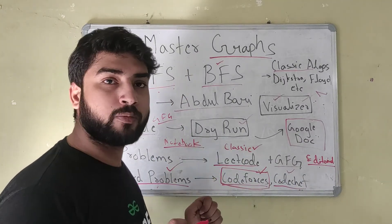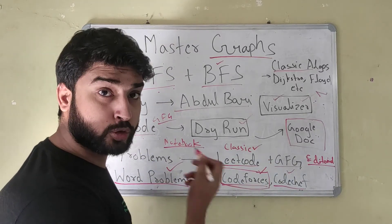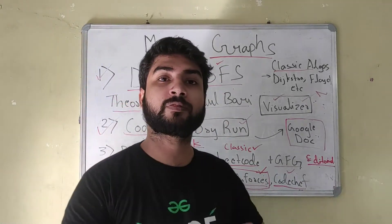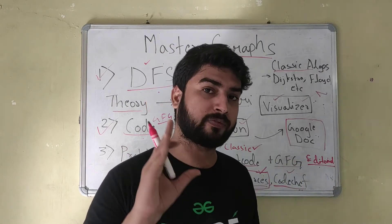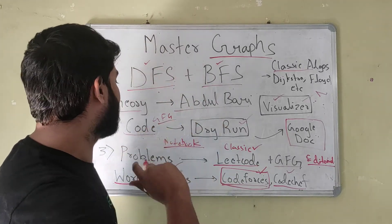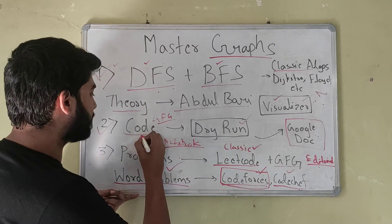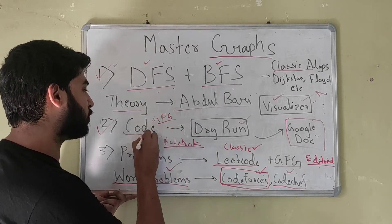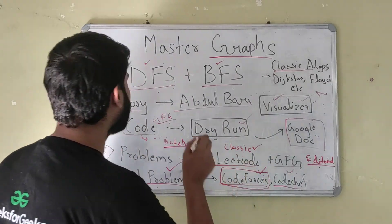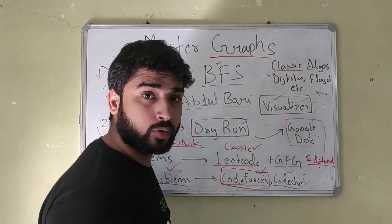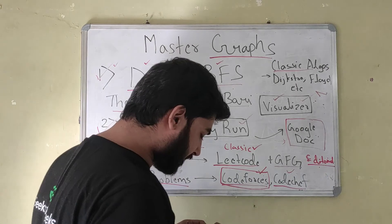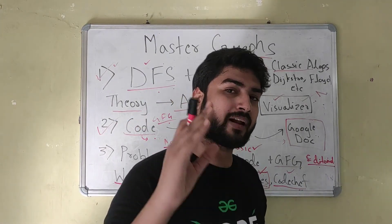So the two types of problems: classic problems — solve them on LeetCode and Geeks4Geeks; word or story-based problems — solve them on Codeforces and CodeChef. With these three simple steps, your graph theory is complete and you don't need to worry about graphs anymore. To summarize: learn the theory (DFS and BFS are very important), visualize how it's working, get the code, dry run the code, understand the code, store it in a Google Doc, solve classic problems, and solve word problems. These are the only things you need to do to become a master of graph theory and crack your dream company.